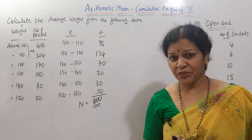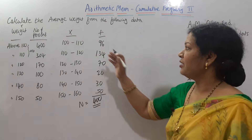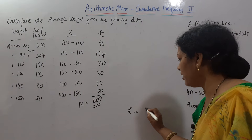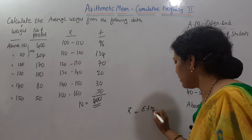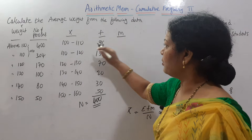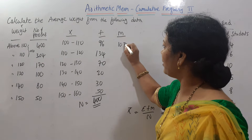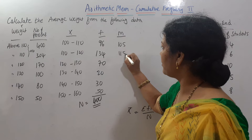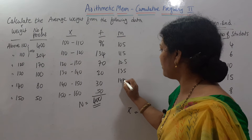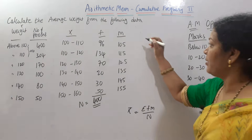Now we find X̄. The formula is X̄ = Σfm / N. We first need the mid value (m). Mid value for 100–110 is (100 + 110) / 2 = 105. Similarly, the mid values are 115, 125, 135, 145, and 155.